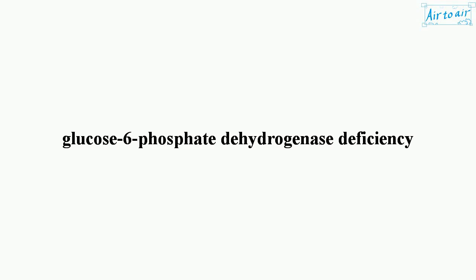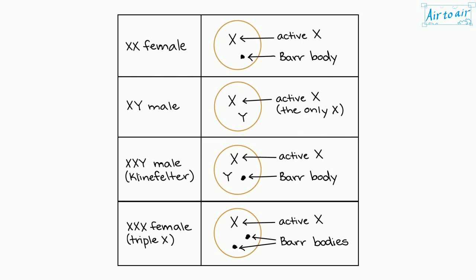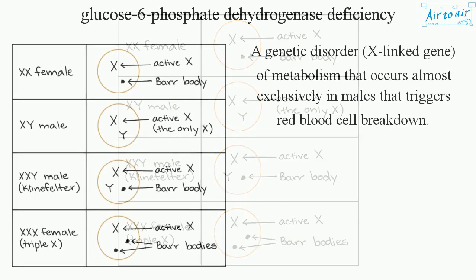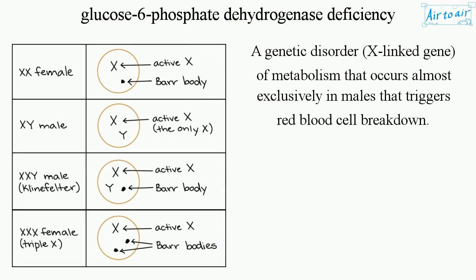Glucose 6-phosphate dehydrogenase deficiency is a genetic disorder linked to an X-linked gene, a disorder of metabolism that occurs almost exclusively in males and triggers red blood cell breakdown.